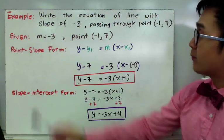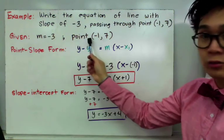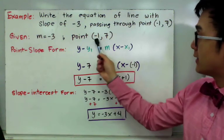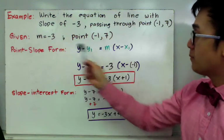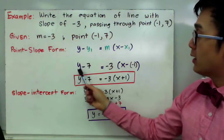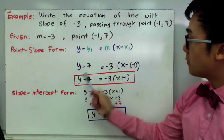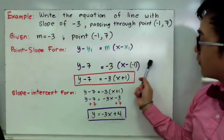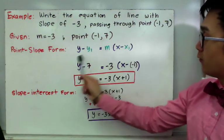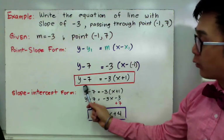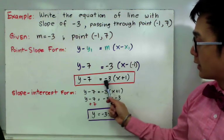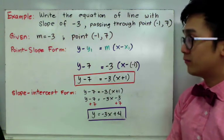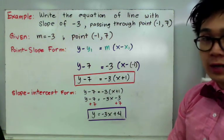To plug in the values of the slope and the point into the point-slope form: y-sub-1 is 7, x-sub-1 is negative 1, and m is negative 3. By using the formula, we can write the equation of a line as y minus 7 equal to negative 3 times x minus negative 1. Further simplifying, the point-slope form of the equation is y minus 7 equal to negative 3 times x plus 1.